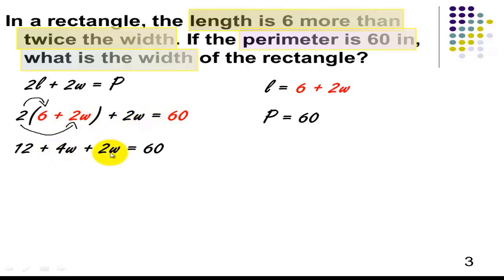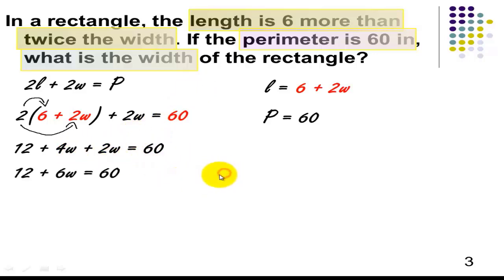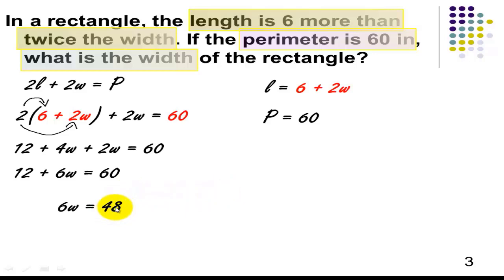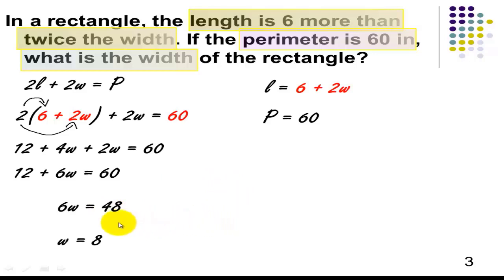Bring down your 2W. Bring down your equal sign and 60. Next, let's combine like terms: 4W plus 2W is equal to 6W. Subtract 12 from both sides — we'll get 48 on the right side. Divide 6 from both sides, we'll get W equals 8. This is the width of your rectangle.